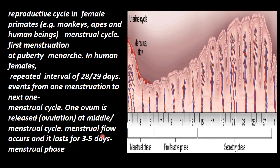After the menstrual phase is over, on the fourteenth day, the ovum is released. Up to this stage, the period is called the follicular phase, where the endometrium again starts to grow and develop, which is required for the maintenance of pregnancy. At the fourteenth day, the ovum is released. If fertilization occurs, this growth of the endometrium helps in the implantation of the embryo.